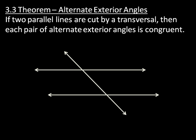Next, theorem 3.3 — alternate exterior angles. This angle here and this angle here are alternate exterior and they are congruent due to the fact that parallel lines are cut by this transversal. This angle is alternate exterior to this angle, and these two have the same measure.